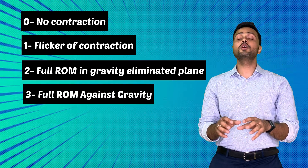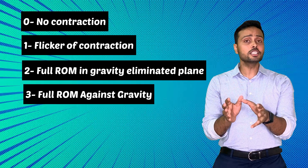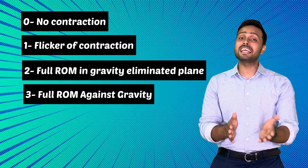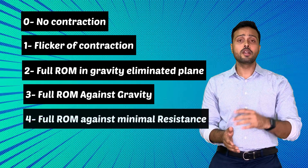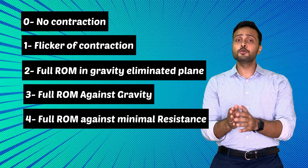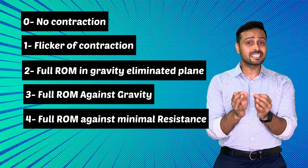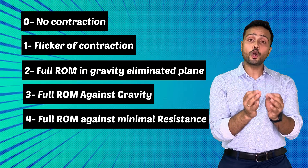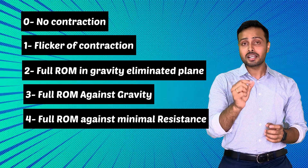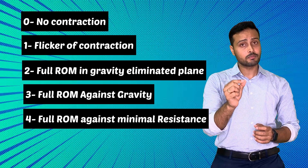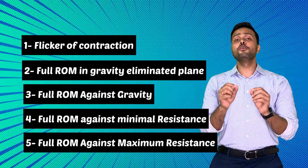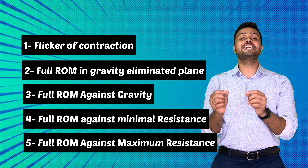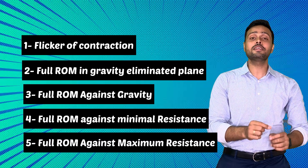Grade three means muscle contraction with full range of motion against gravity. Grade four is full range of motion against gravity along with minimal resistance. Grade five is full range of motion against gravity with maximum resistance.